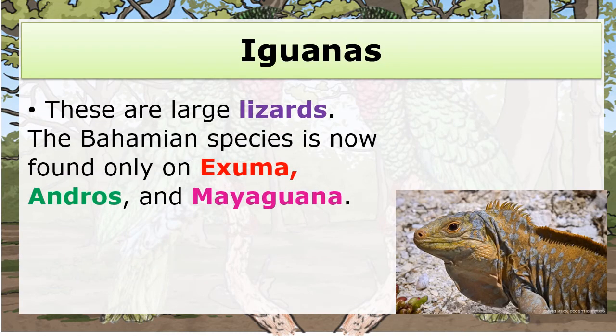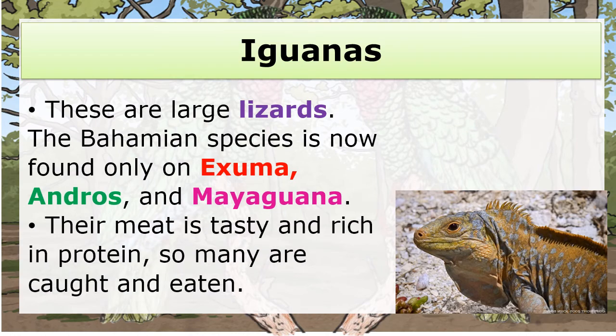The Iguana. These are large lizards. The Bahamian species is now found only on Exuma and Andros. Their meat is tasty and rich in protein, so many are caught and eaten.